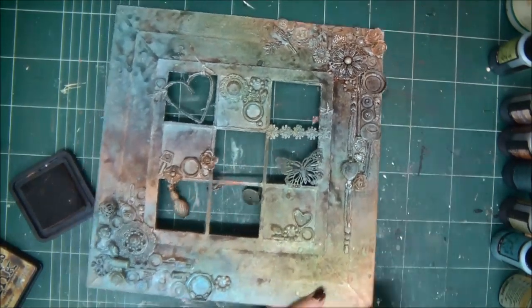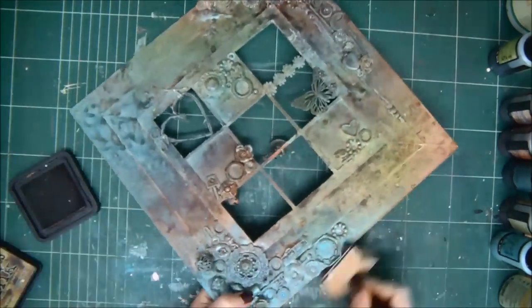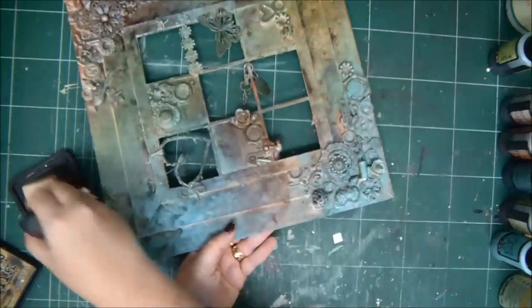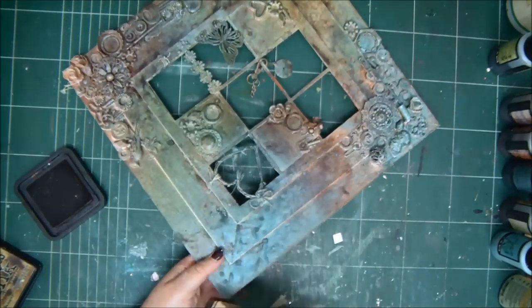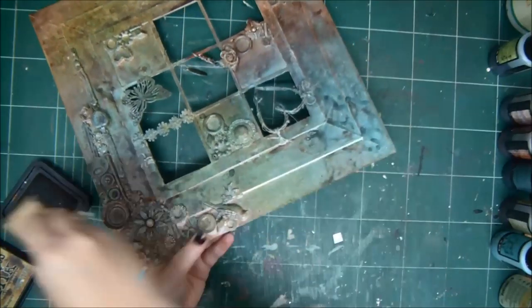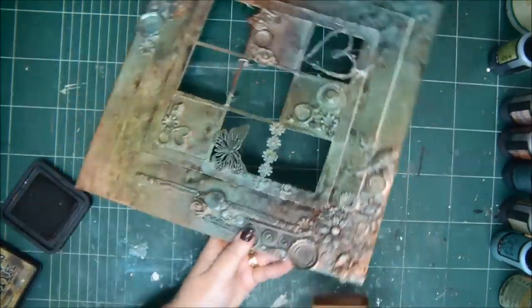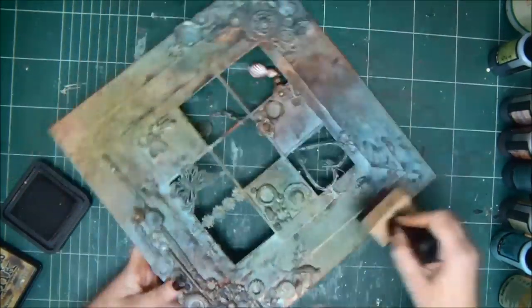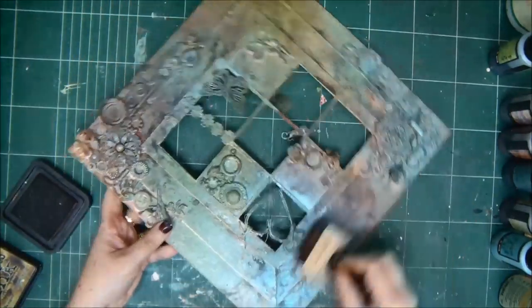And then for my final touch, I'm going to just distress the edges a little bit with the Vintage Photo Distress ink. Just gives it a little bit more definition. It is a frame after all. So you want everything to be really nice and framed.